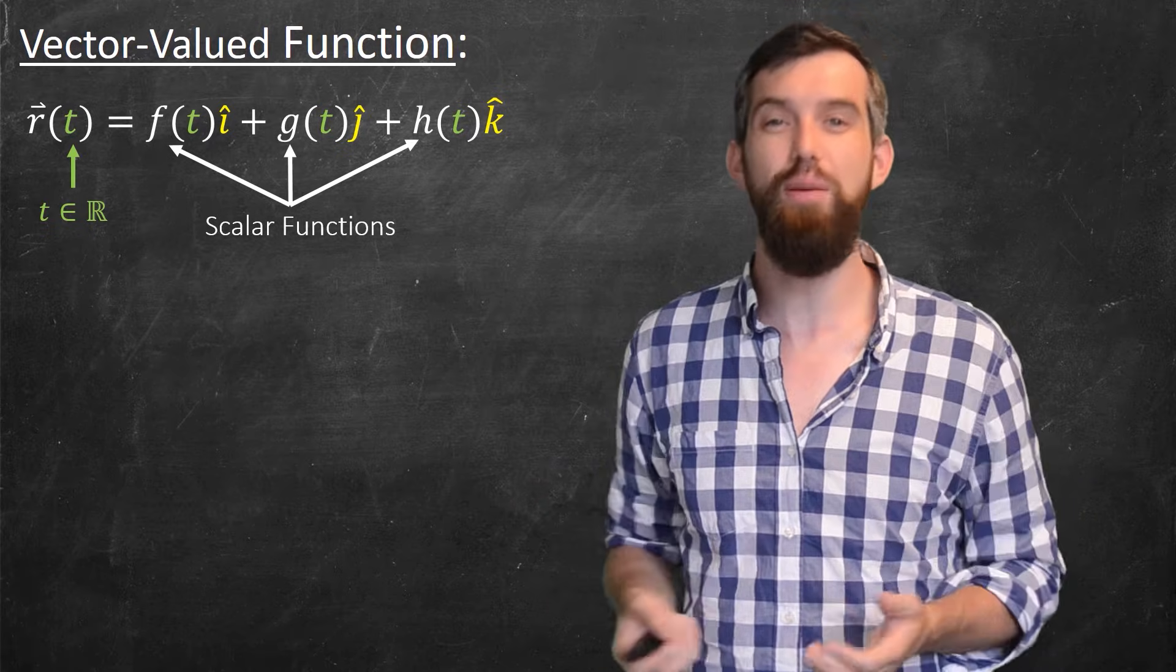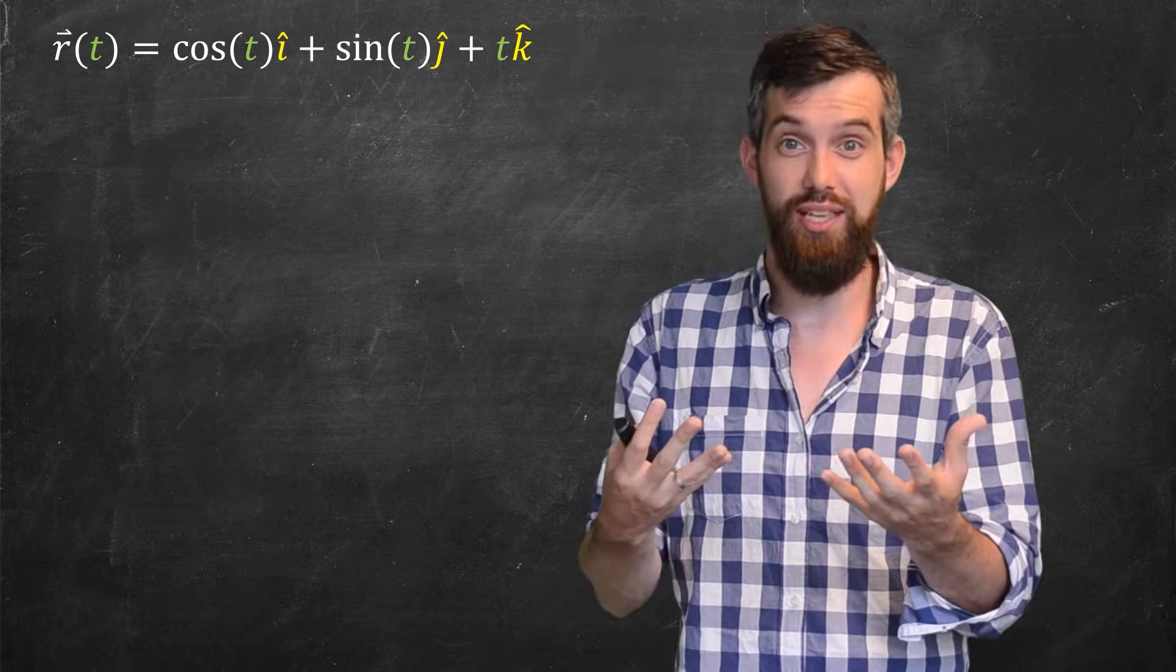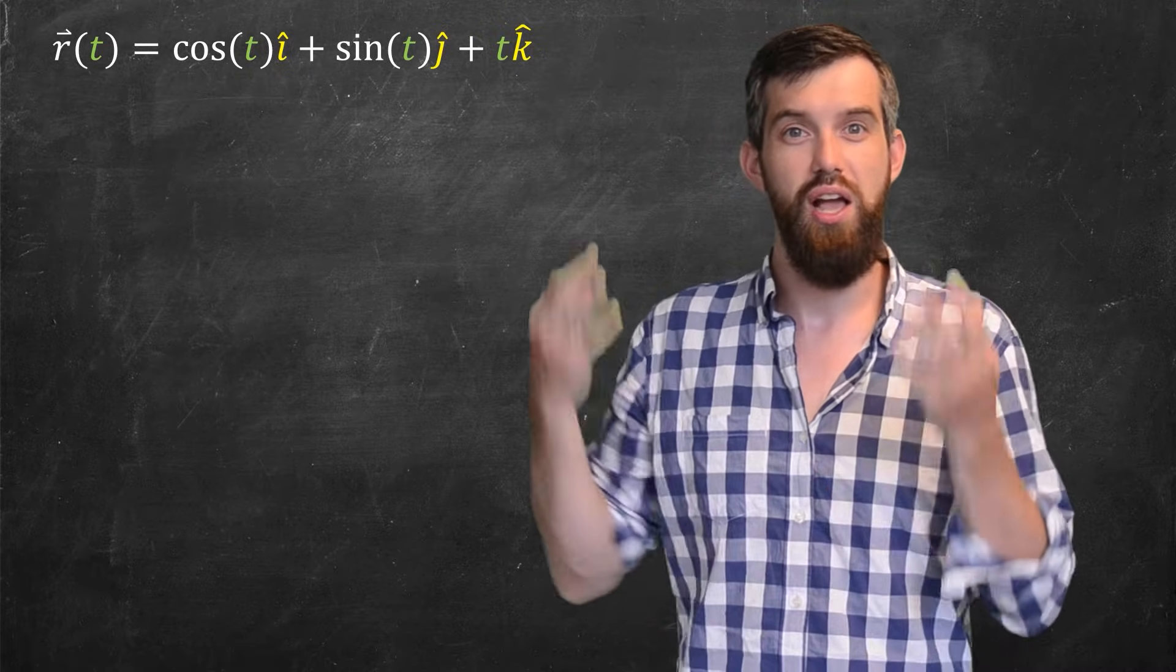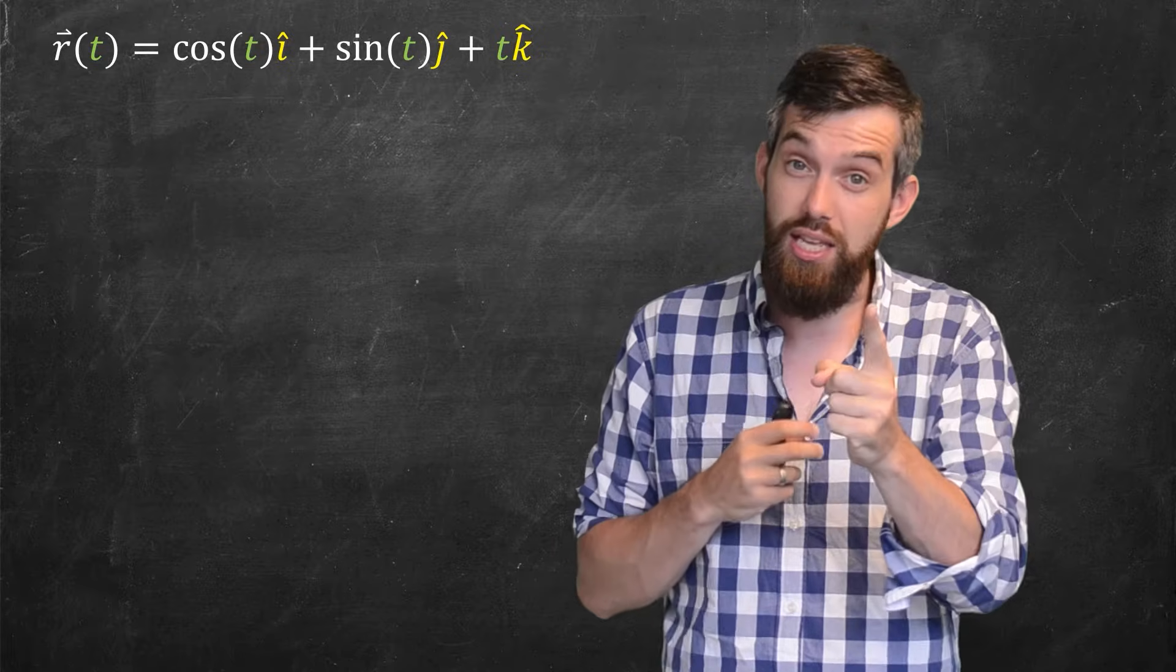I'll give you an example of what these kind of things look like. Consider this particular case. So this is the vector-valued function, cos in the i-hat, sin in the j-hat, and just t in the k-hat.